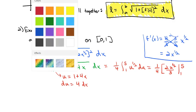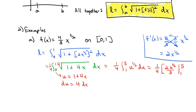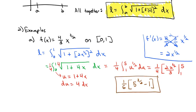That gives us 1/4 times u to the 3/2 times 2/3, integrated from 1 to 5. Multiplying the constants together, we end up with 2/12 times (5 to the 3/2 minus 1 to the 3/2, which is just minus 1). And 2/12 reduces down to 1/6. So we have 1/6 times (5 to the 3/2 minus 1). That is the length of the arc of 4/3 x to the 3/2 between 0 and 1.